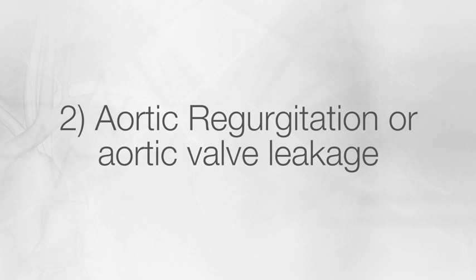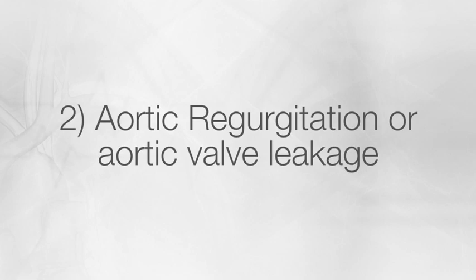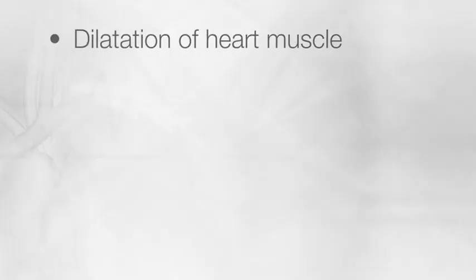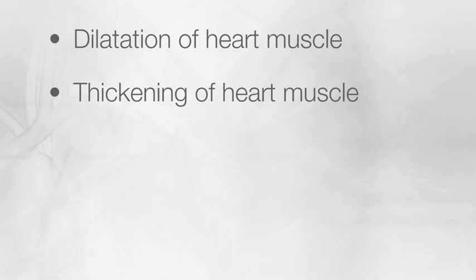By contrast, aortic regurgitation is a condition where there's significant leakage of the valve from the ascending aorta backwards into the heart. Instead of a pressure overload phenomenon, this results in a volume overload phenomenon. This can cause dilatation of the heart muscle as well as thickening of the heart muscle.